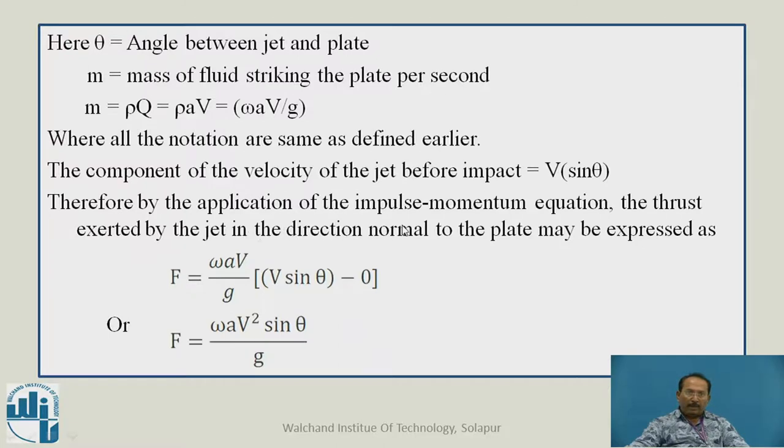Therefore, by application of impulse momentum equation, the thrust exerted by the jet in the direction normal to the plate is expressed as F equals ωAV/g times V sin theta. Since the final velocity is zero, F equals ωAV² sin theta upon g. Keep in mind, F equals ωAV² sin theta upon g.